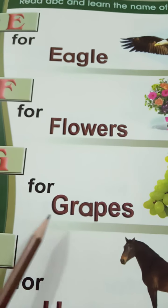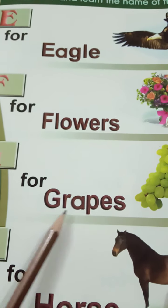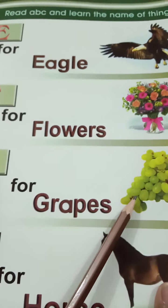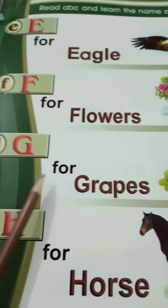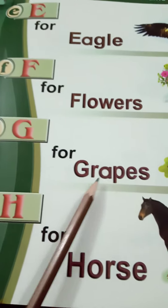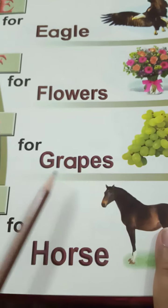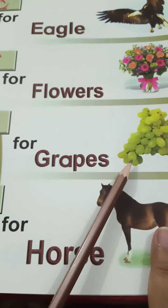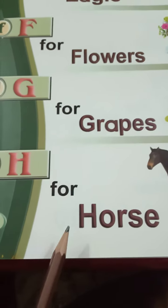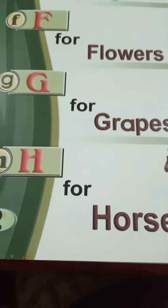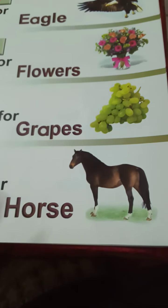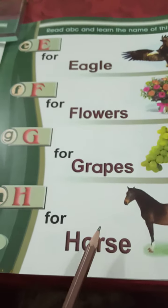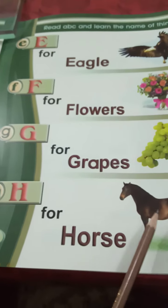G for Grapes. Grapes means angoor. H for Horse. Horse means ghoorah.